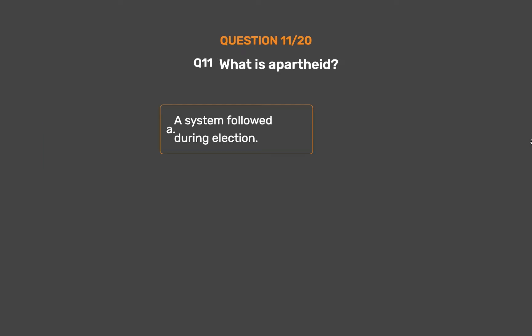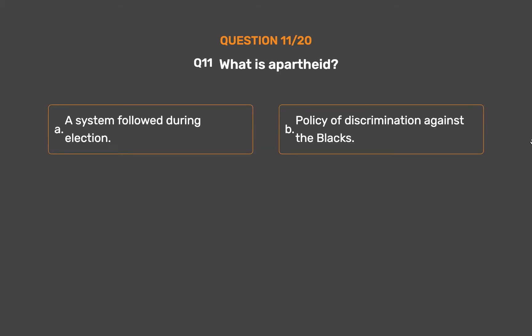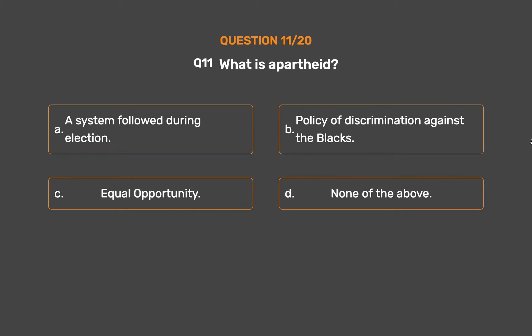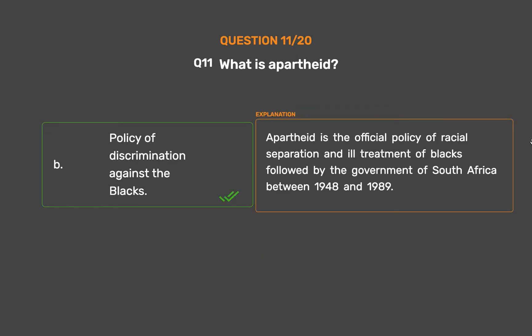Question 11: What is apartheid? Option A: A system followed during election. Option B: Policy of discrimination against the blacks. Option C: Equal opportunity. Option D: None of the above. The correct answer is Option B: Policy of discrimination against the blacks. Apartheid is the official policy of racial separation and ill-treatment of blacks followed by the government of South Africa between 1948 and 1989.